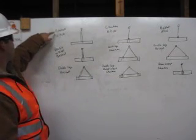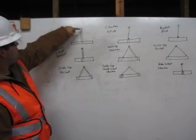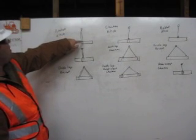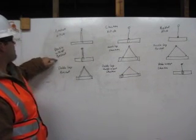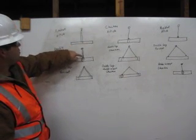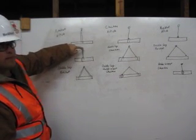First, we have a basket hitch. We have a wrap that comes all the way down the pipe and comes back up and attaches. Second one, we have a double wrap basket where it comes around the pipe, wraps around twice, and it comes straight back up.